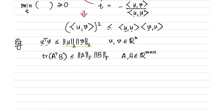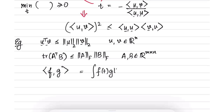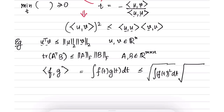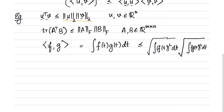Another example involves functions. Inner products can be defined over functions: if f and g are two functions, one way of defining their inner product is the integral of f(t) times g(t) dt over some range in the domain of f and g. The corresponding Cauchy-Schwarz inequality then states that this integral is less than or equal to the square root of the integral of f(t) squared dt, times the square root of the integral of g(t) squared dt.